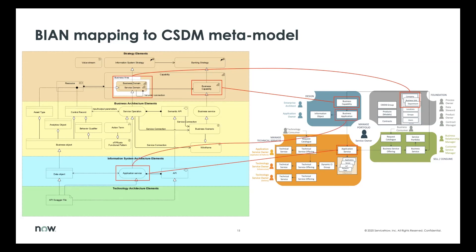We also have a mapping between the application service to our two objects: business application and application service. In the BIYN model, they don't really have the separation between the business app and app service — they just have one application service definition. But if you look at the definition, it pretty much aligns with business application and is not specific to application service in that they don't separate out different installs or different environments. The data object, for the most part, aligns with our information object at this level. In CSDM, we have a higher level which is data domain as well, which could also align with data objects as well as possibly business objects within the BIYN model.